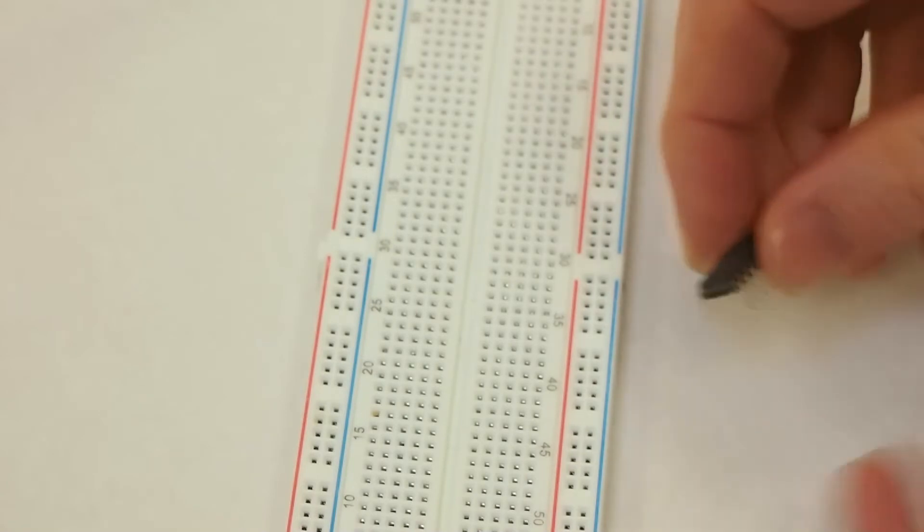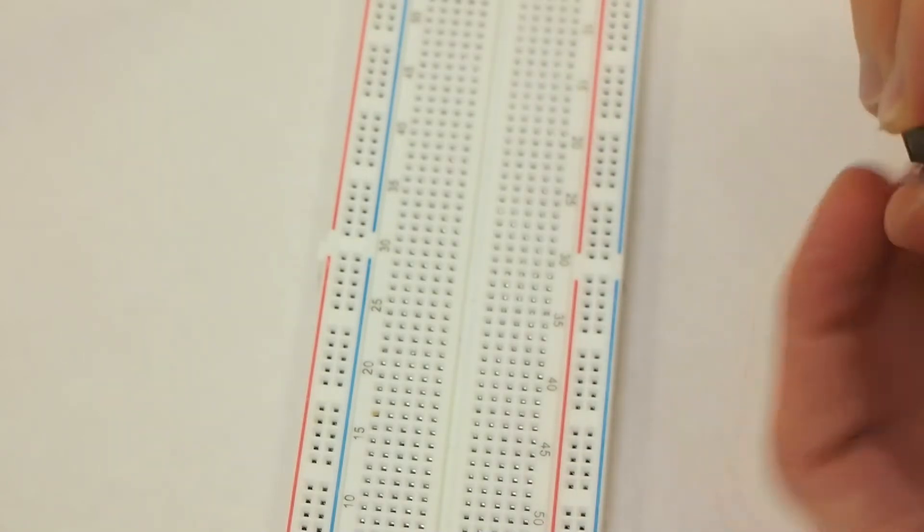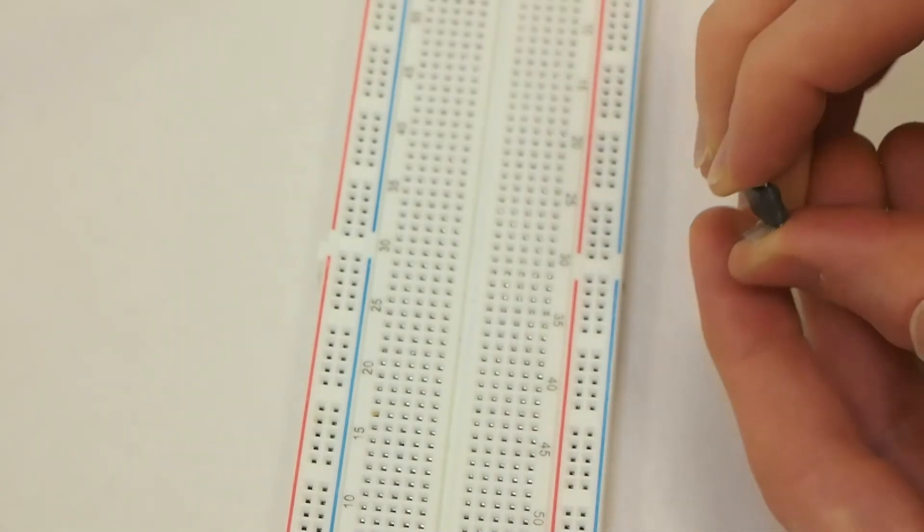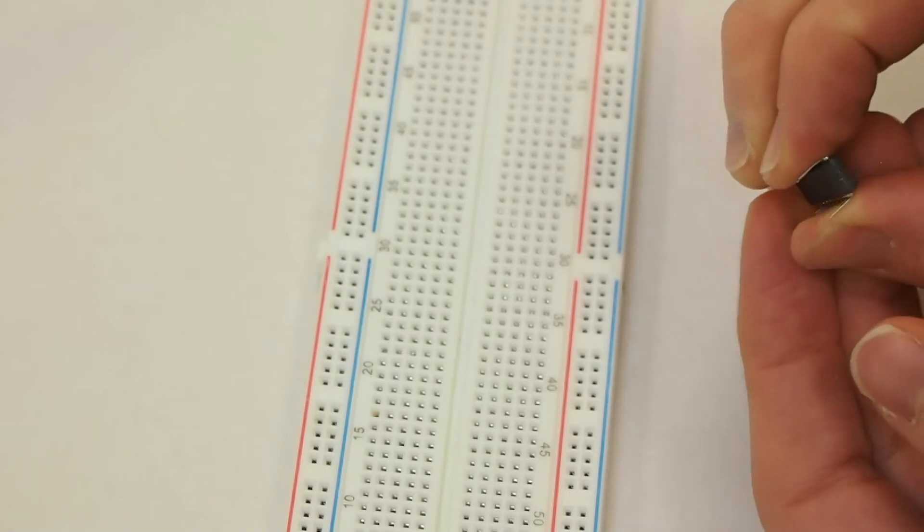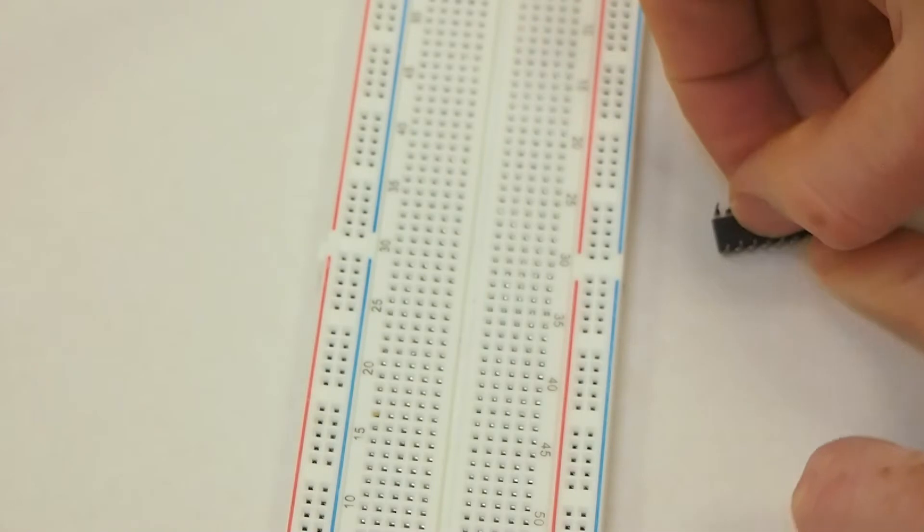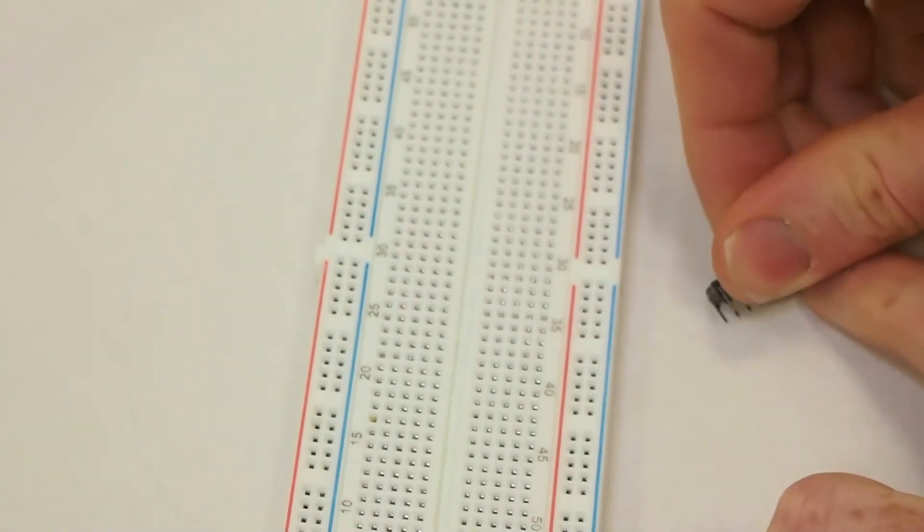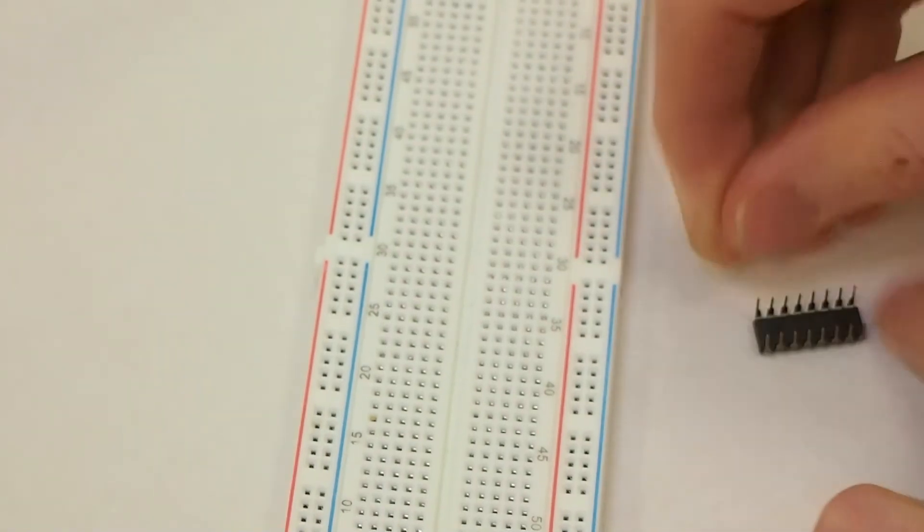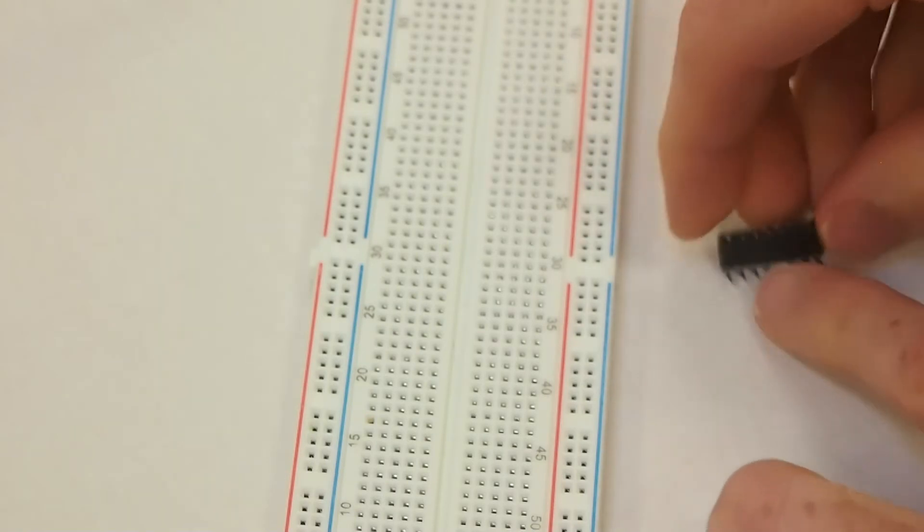The first thing you want to do when you pull your chips out of their package is to squeeze the leads together just a little bit. You can do this with your fingers, or sometimes it's easier to put the whole thing down on a flat surface and gently bend it in until the pins are vertical.